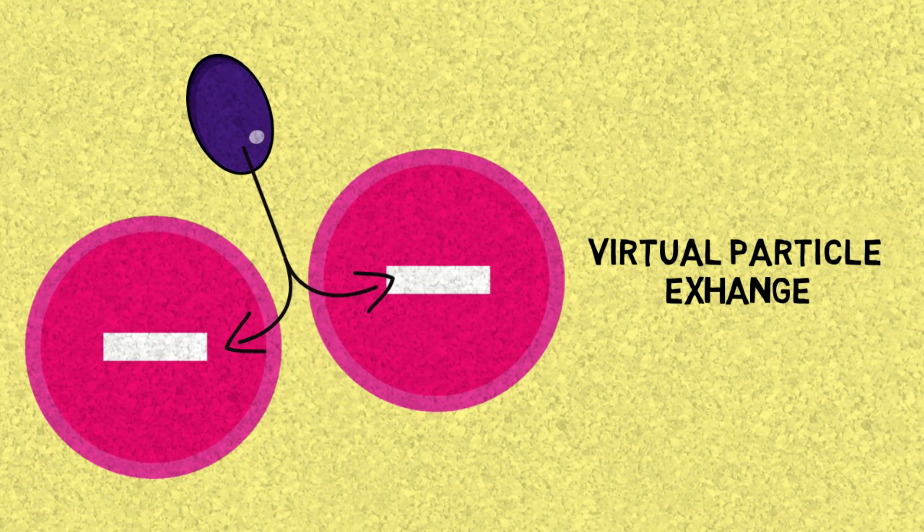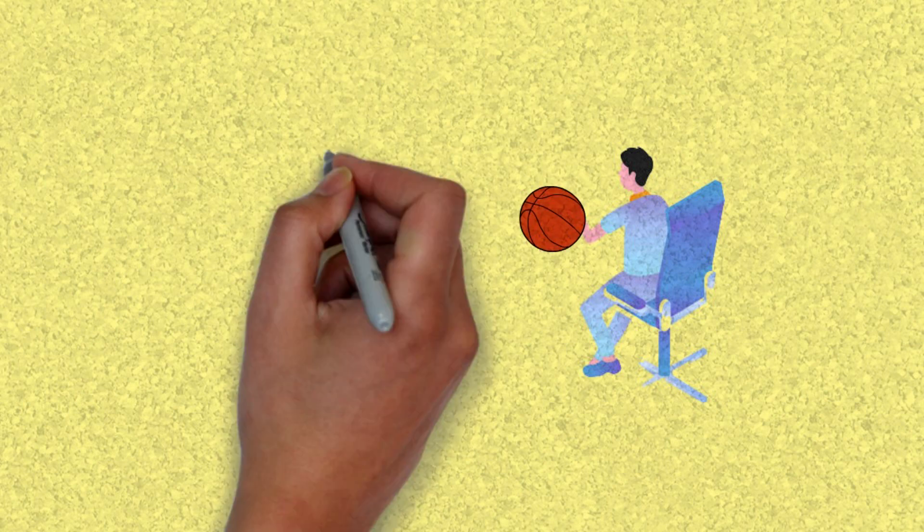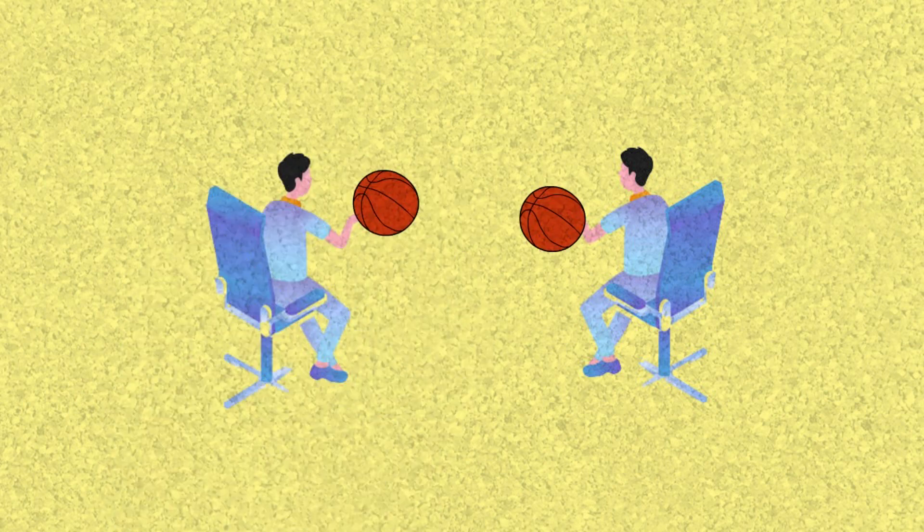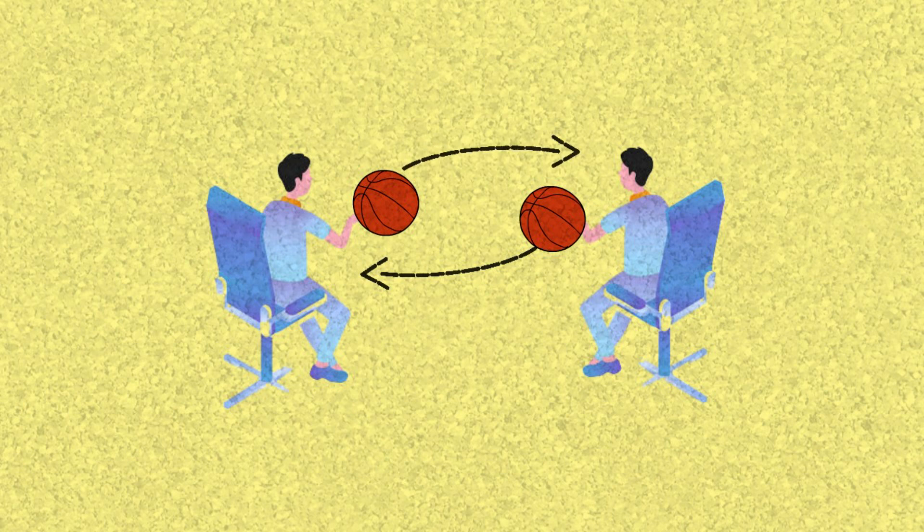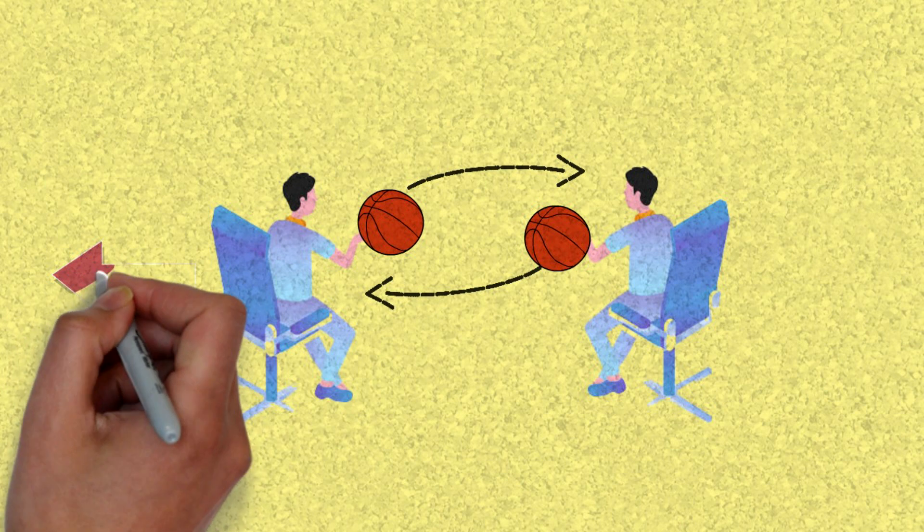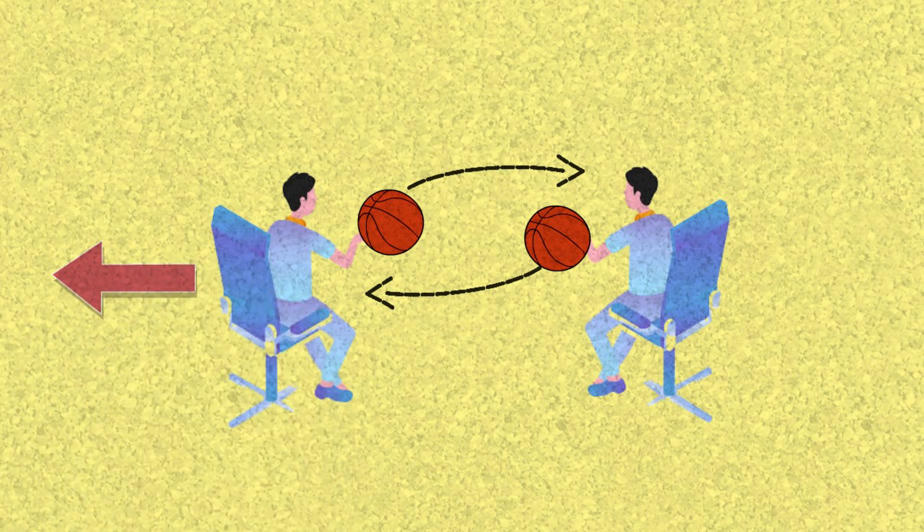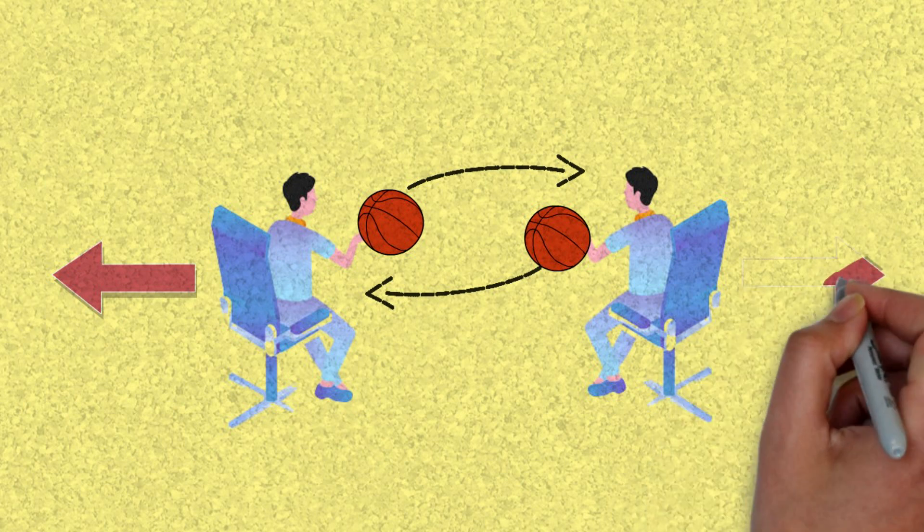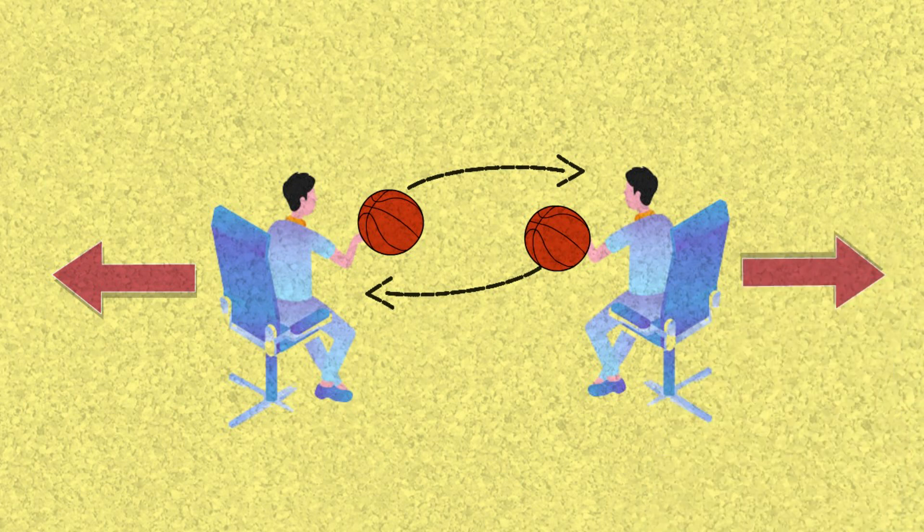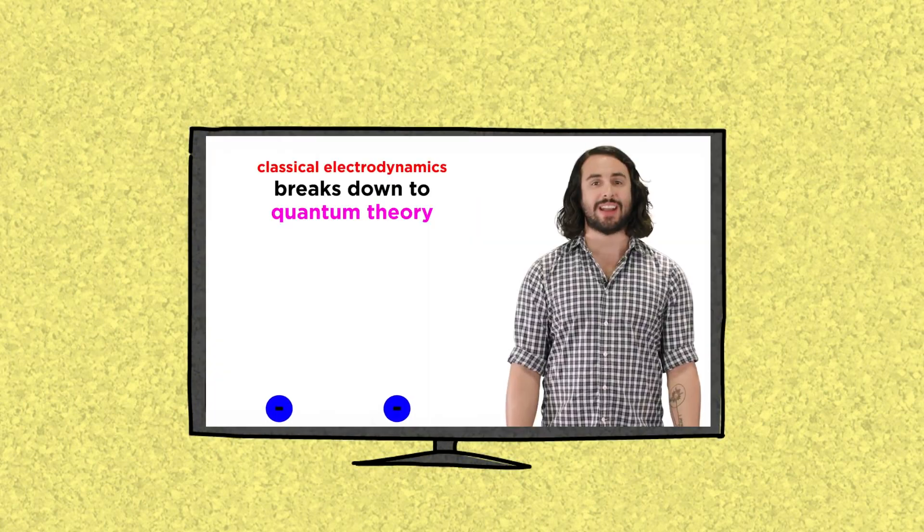But how does this work? Look at this analogy. Two people are seated in an office chair. They throw basketballs at each other. In other words, they exchange basketballs. When they catch the basketball, they will move away from each other, just by the force of the basketball thrown. This is like what happens when electrons exchange photons.